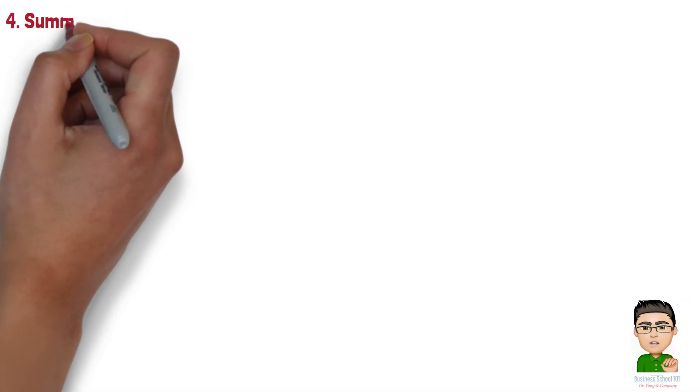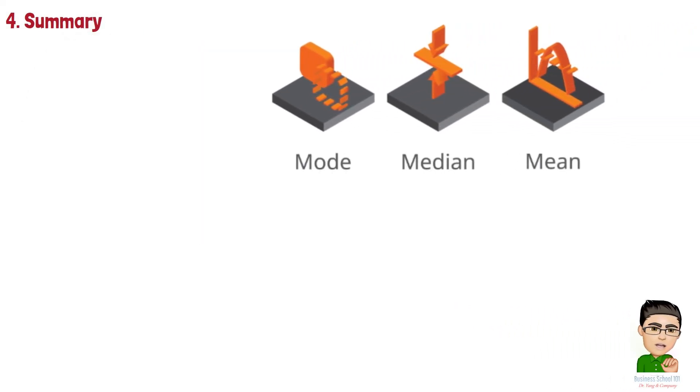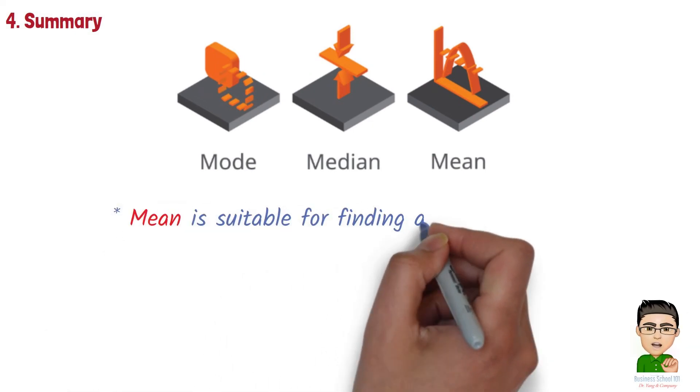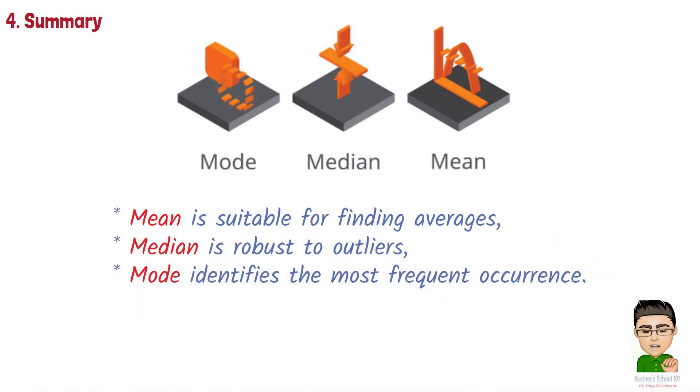Section 4: Summary. To sum up, managers should choose between mean, median, and mode based on the specific nature of their data and the insights they seek. Mean is suitable for finding averages, median is robust to outliers, and mode identifies the most frequent occurrence. The choice depends on the business question and the characteristics of the data being analyzed.